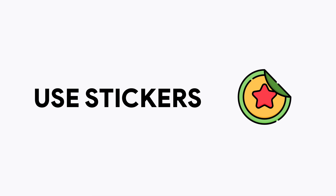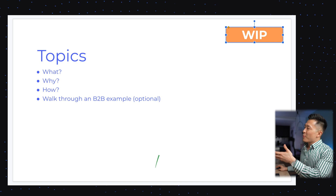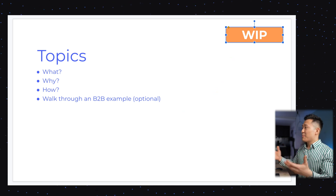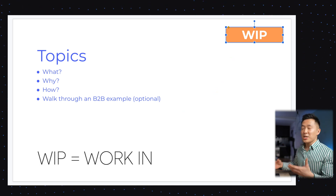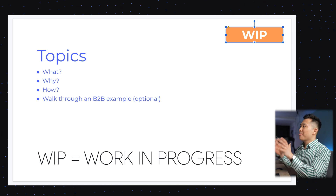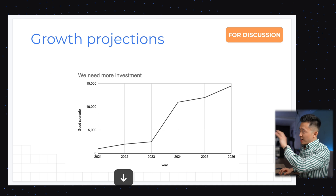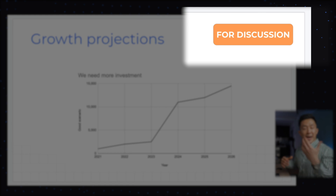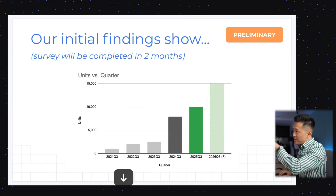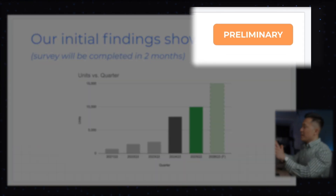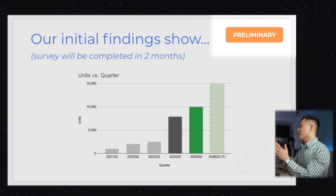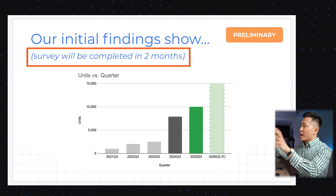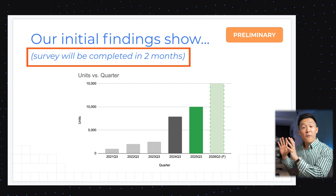Tip number seven is to use stickers to protect yourself during presentations. If you've ever seen something like this in a PowerPoint or Google Slides deck, you know what I'm talking about. WIP stands for work in progress — so if someone clicks into your presentation and it's not done yet, they know it's still ongoing. If you see a 'for discussion' sticker, it usually means it's a very rough first draft and you need someone like your manager to review and let you know if any changes are needed. The preliminary sticker means the slide itself is completed, but the data within is still ongoing — for example, the market survey is still going on but you're presenting your initial findings so far.